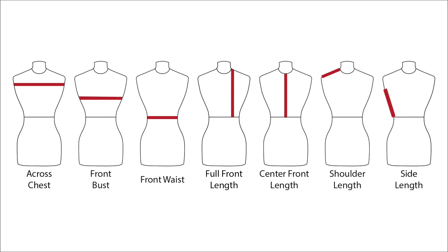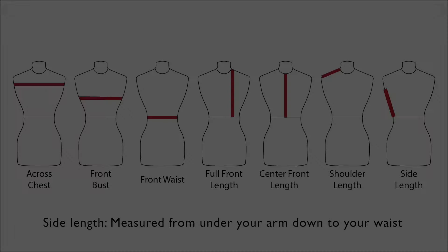For the front bodice, you will need seven measurements. Each horizontal measurement should be measured around the front half of your body, basically from side seam to side seam. The side length should be measured from under your arms down to your waist.